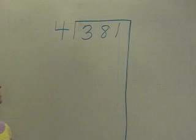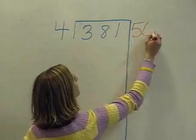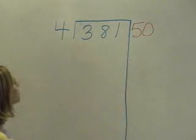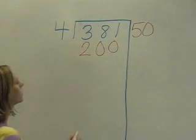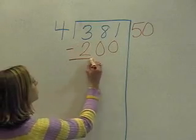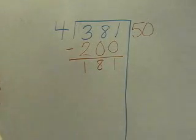For example, 381 divided by 4. I'm going to think to myself, how many times will 4 go into 381? I know it will go in at least 50 times. 50 times 4 is 200. I'm going to subtract 381 minus 200. I get 181.